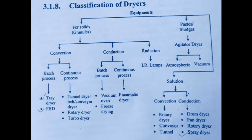Classification of dryers: for solids/granules, drying can be done by convection, conduction, or radiation. For convection — batch process uses tray dryer or FPD (fluidized bed dryer); continuous process uses tunnel dryer, belt conveyor dryer, rotary dryer, or turbo dryer. For conduction — batch process uses vacuum oven or freeze dryer (lyophilizer); continuous process uses a pneumatic dryer.